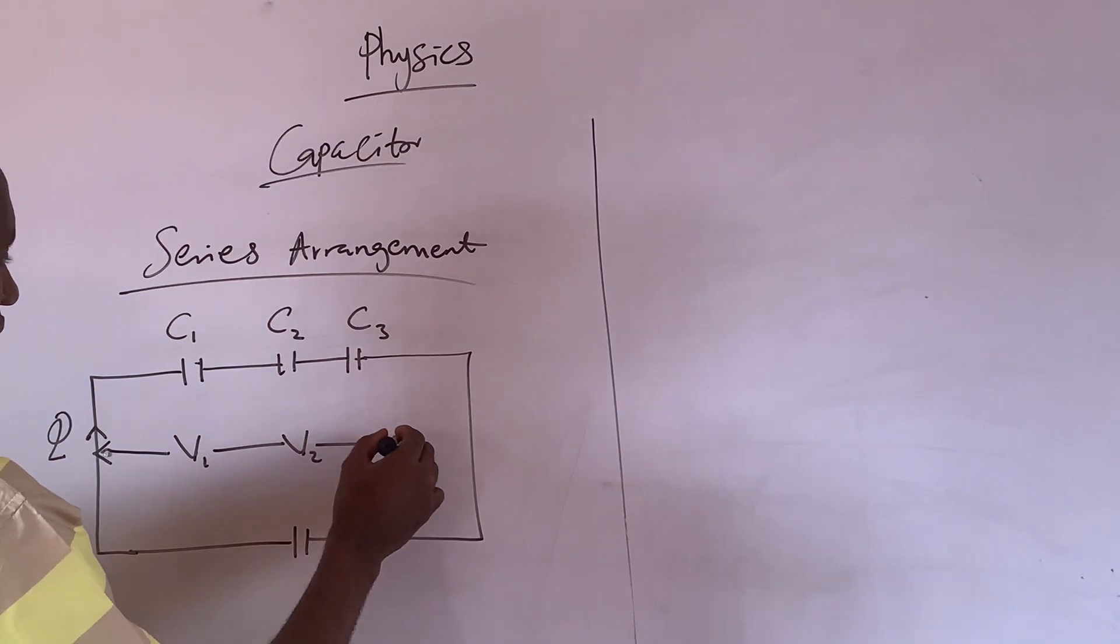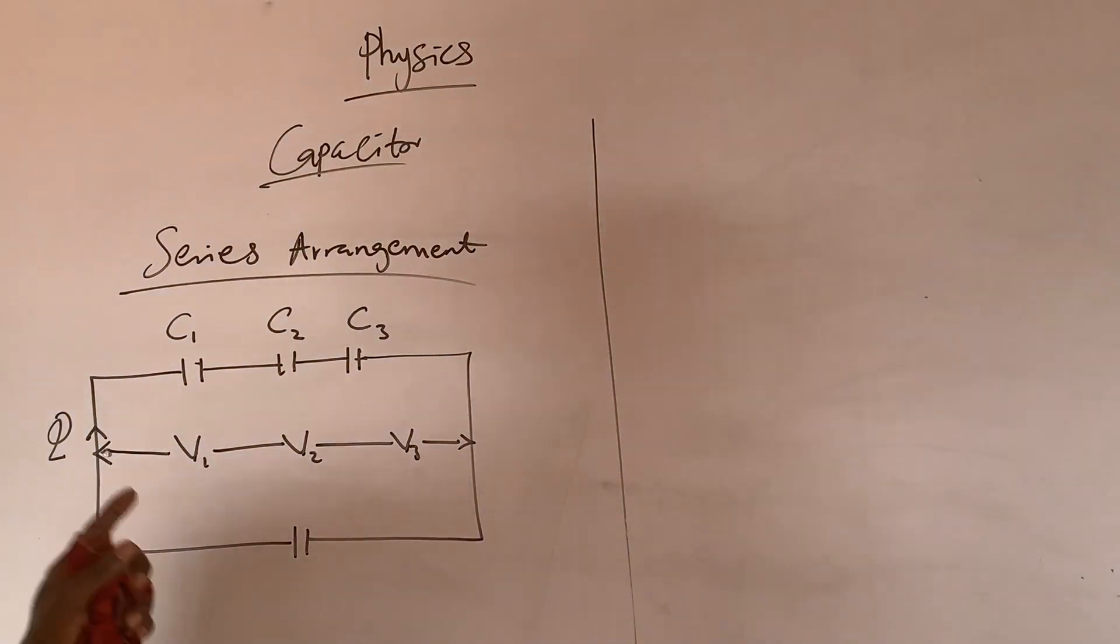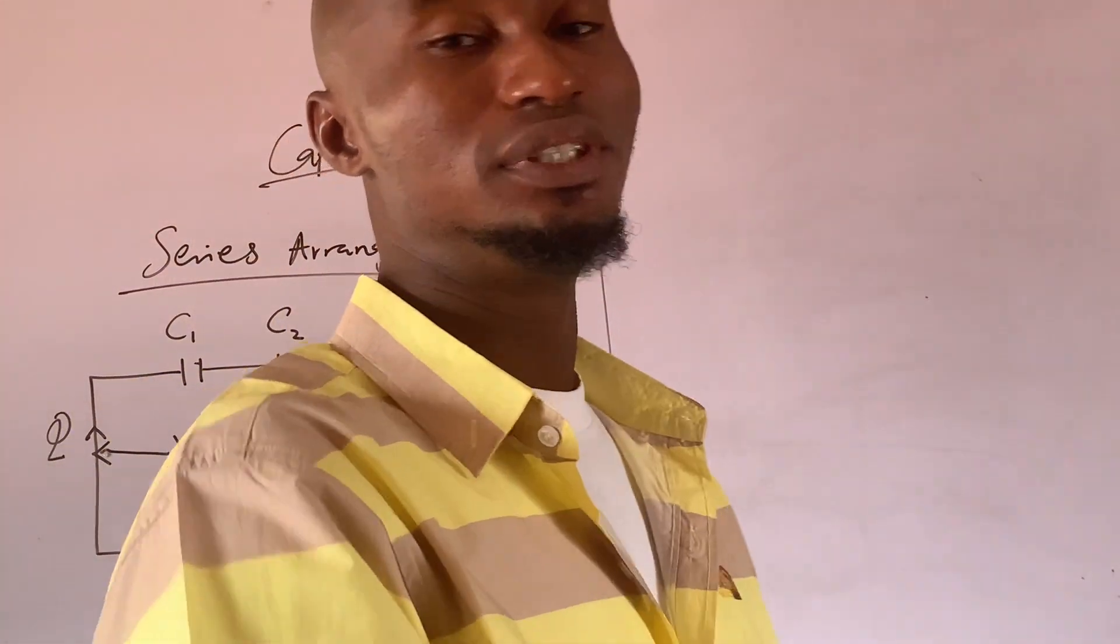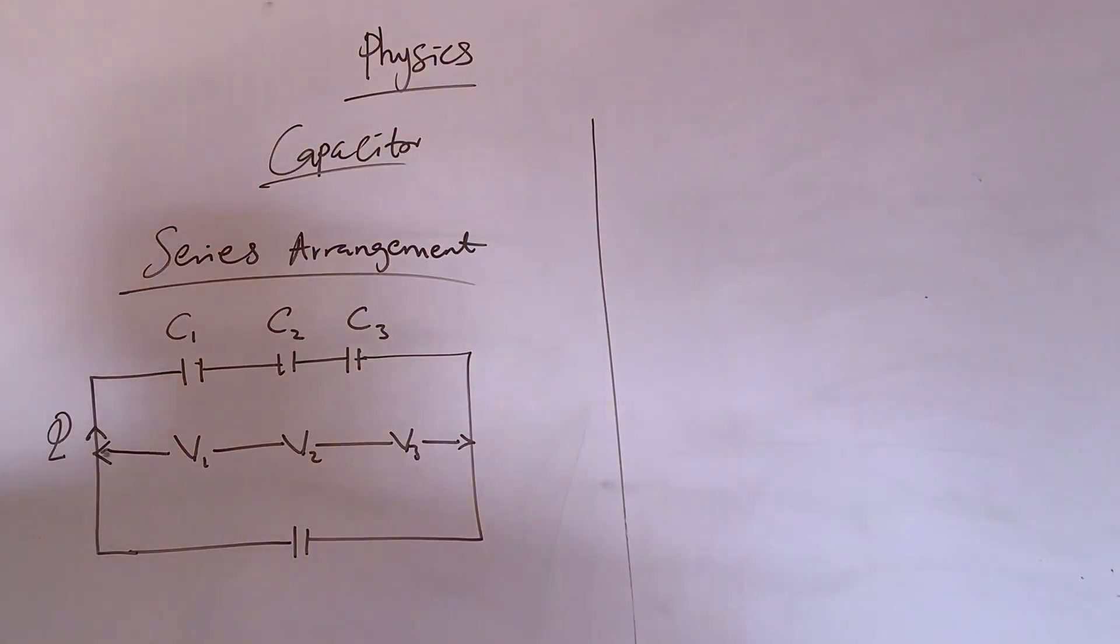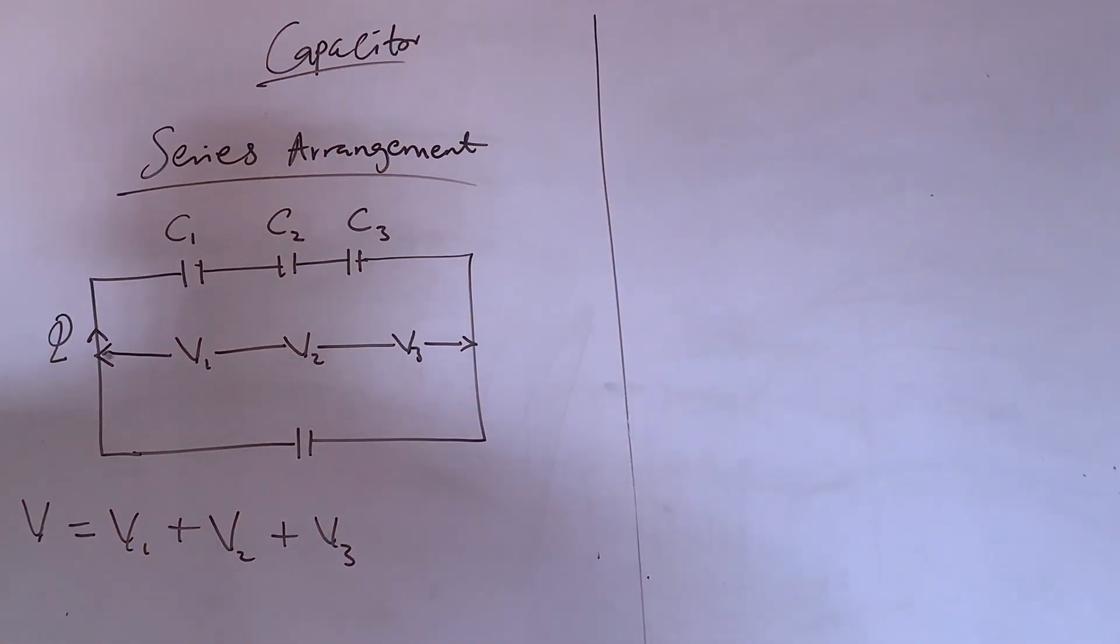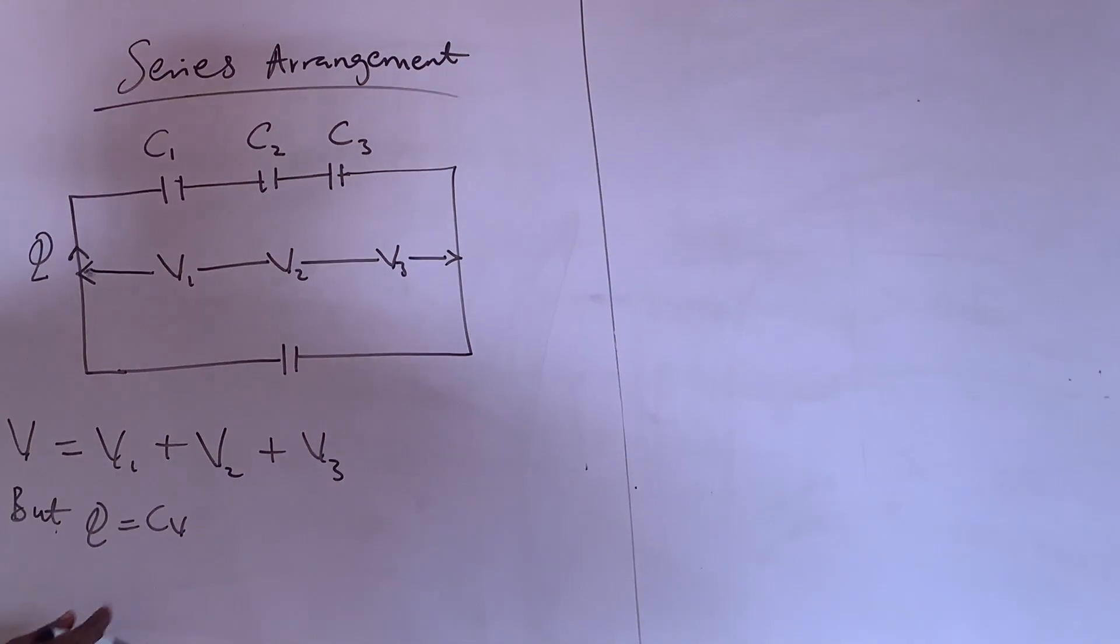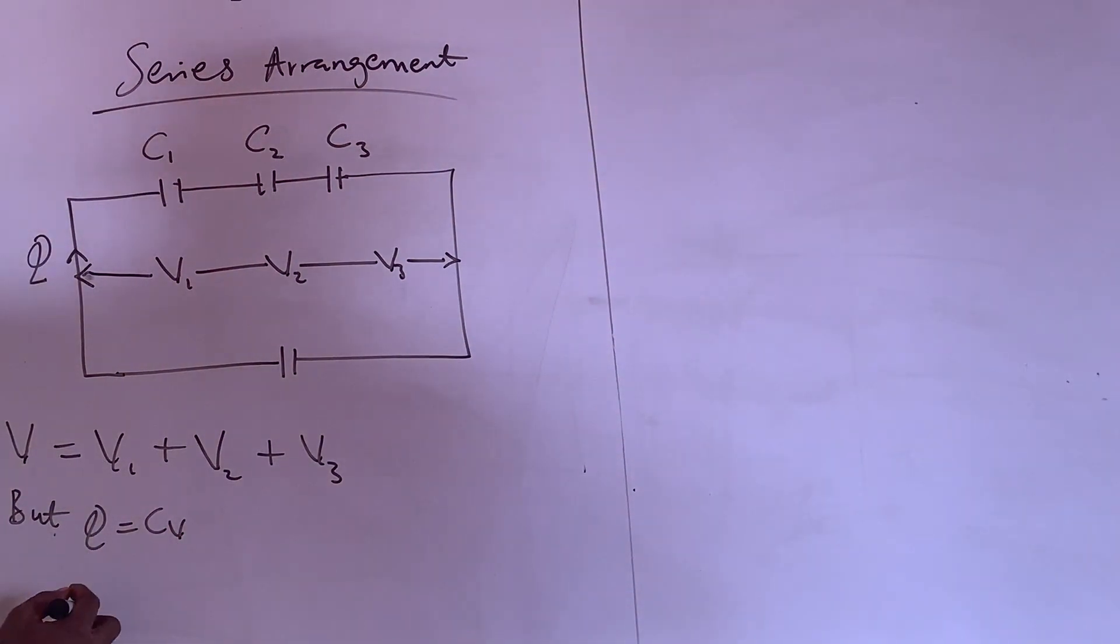C1. The charge is the same, but different voltage, that is why they said across different PD. So what does that mean? It means V is equal to what? V1 plus V2 plus V3.